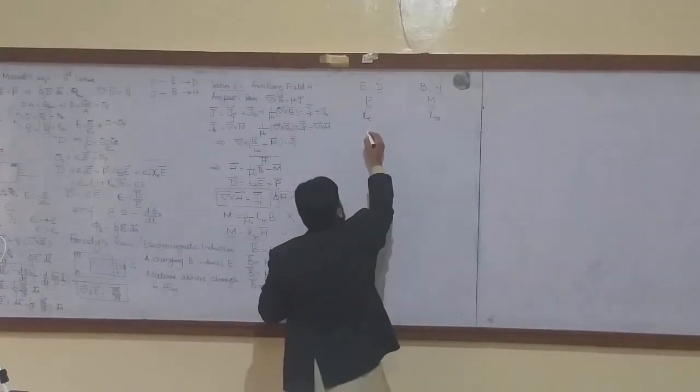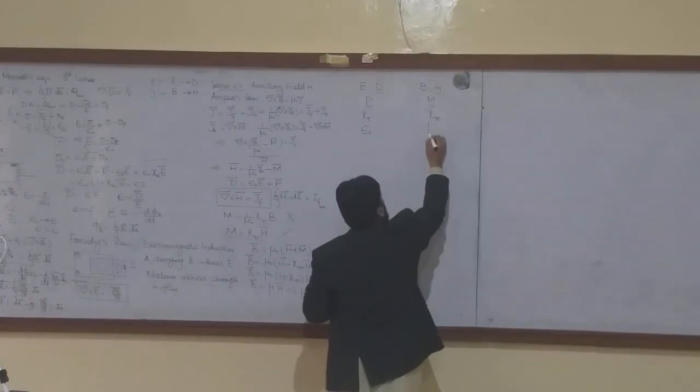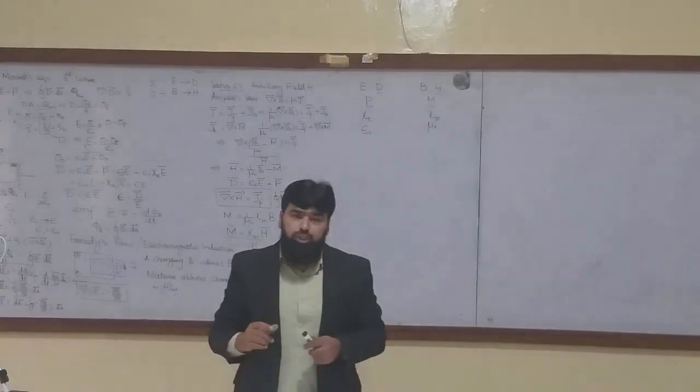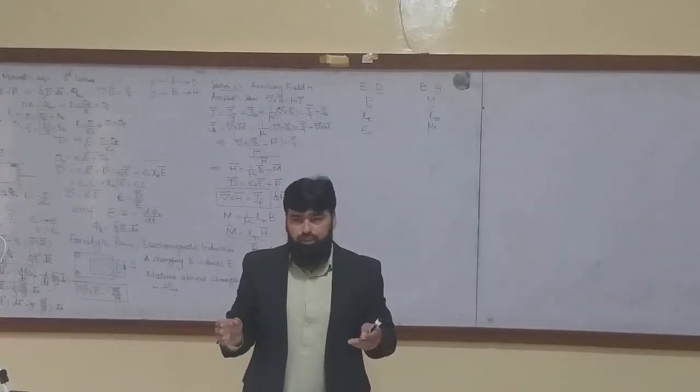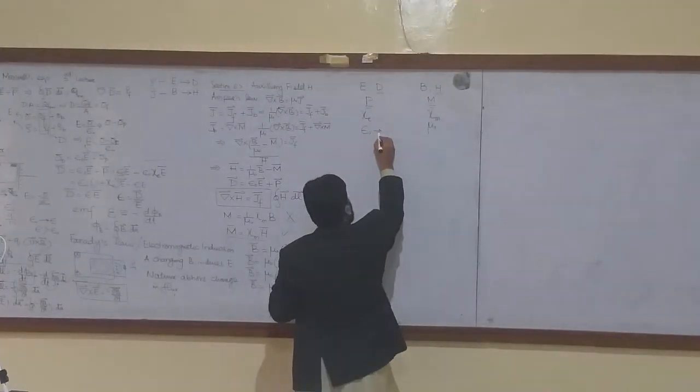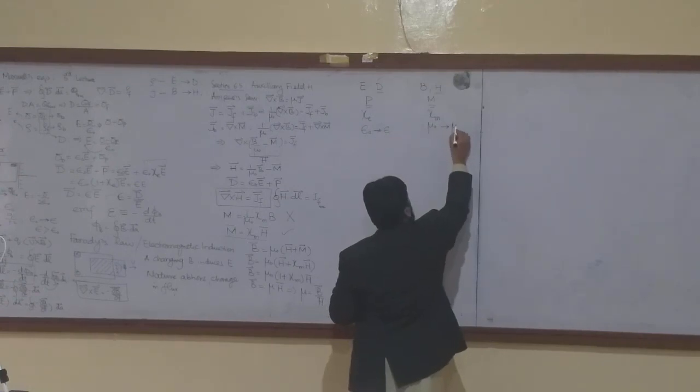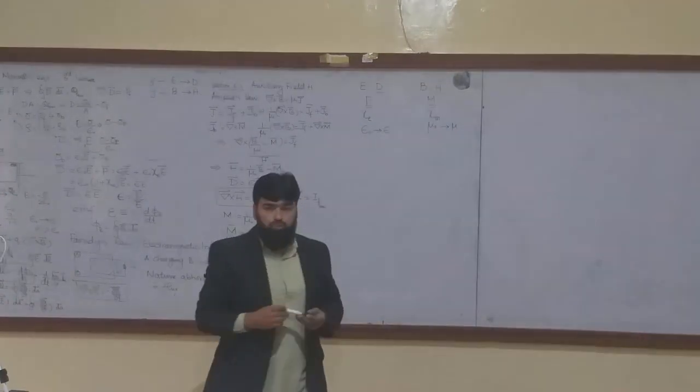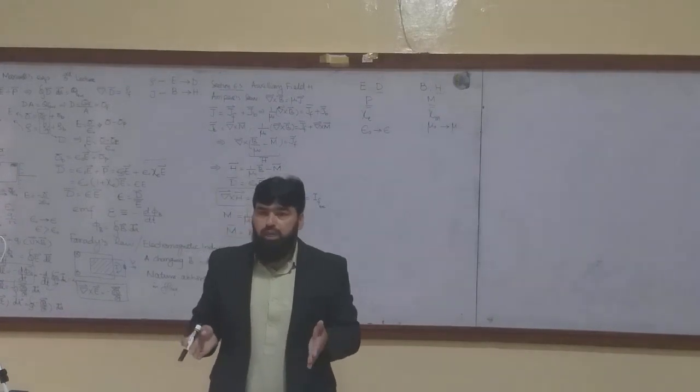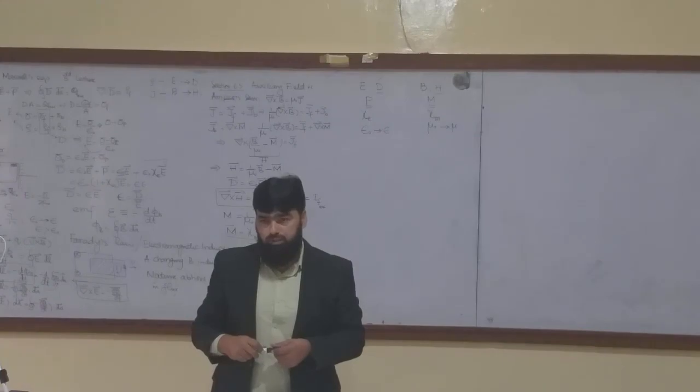Over here, we are having the permittivity of free space and here the permeability of free space. So free space are different. And then, this one for material goes to epsilon, means the dielectric constant. This one goes to mu. And these are the relative permittivities of the material.